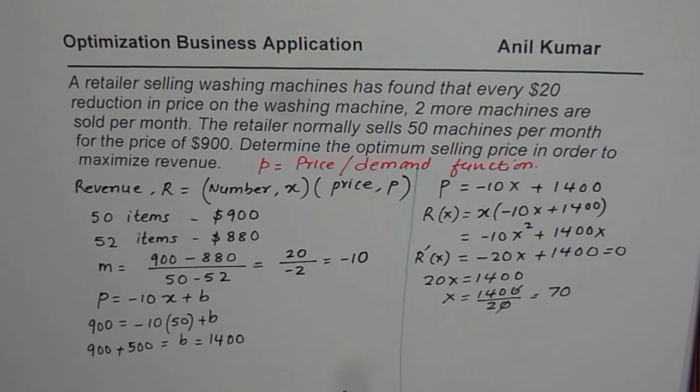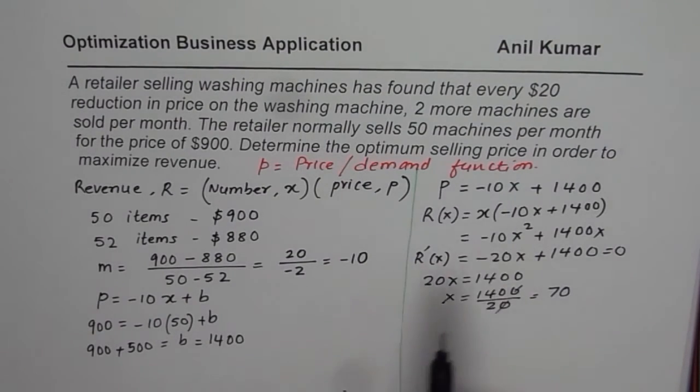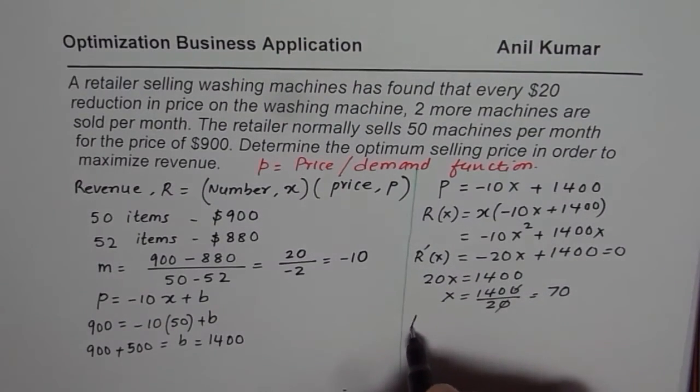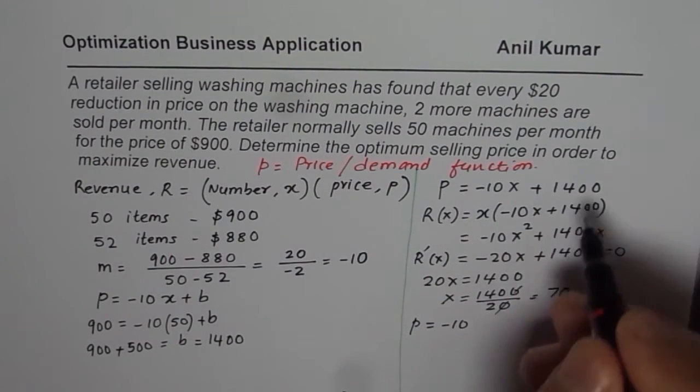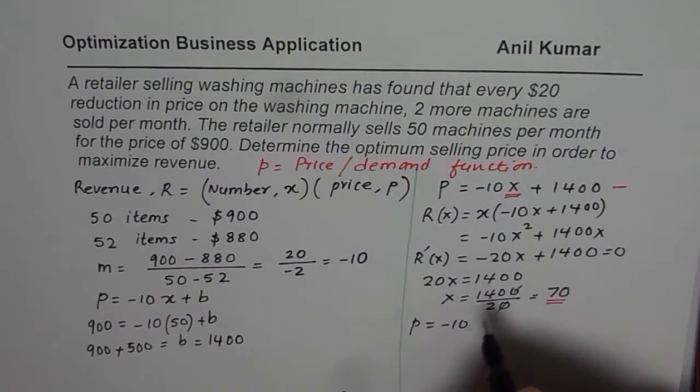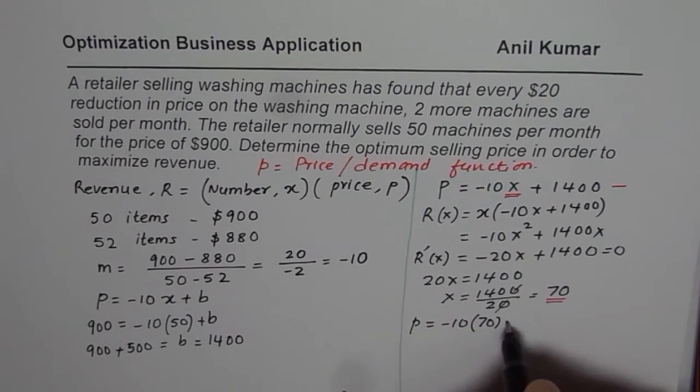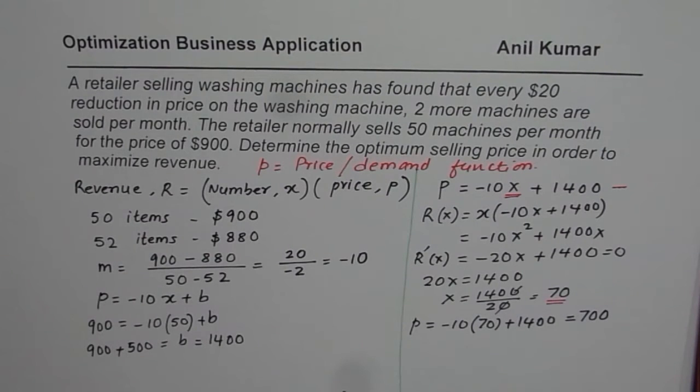So 70 items are sold to give the maximum revenue. Now, what is the optimum selling price we want to know? We will substitute this value of X in the price function. So we will say price is equals to minus 10 times 70 plus 1400. That gives us a price of 1400 minus 700 which is 700. So $700 becomes the optimum selling price.